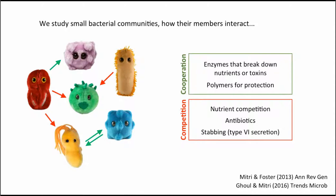We study small bacterial communities and focus on how different members interact — whether they are species, strains, or individual cells. When we talk about interactions, we mean any way in which one cell can affect the growth and survival of another. These broadly come in two flavors: cooperation, where the effect is positive on another individual's fitness, and competition, where there is a negative effect due to the presence of another species or strain. One species might secrete enzymes that break down complex molecules, providing food to nearby cells, or break down toxins that detoxify the environment for neighbors. Bacteria are also famous for producing polymers forming biofilms that can protect neighbors from the immune system or antibiotics.